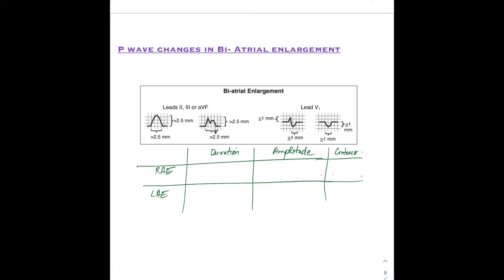We will now study the P wave changes in biatrial enlargement. Most of the time it's not just the right atrium or the left atrium that is enlarged — rather, both of them are enlarged. So it's important to know the morphology of the P wave when both atria enlarge.